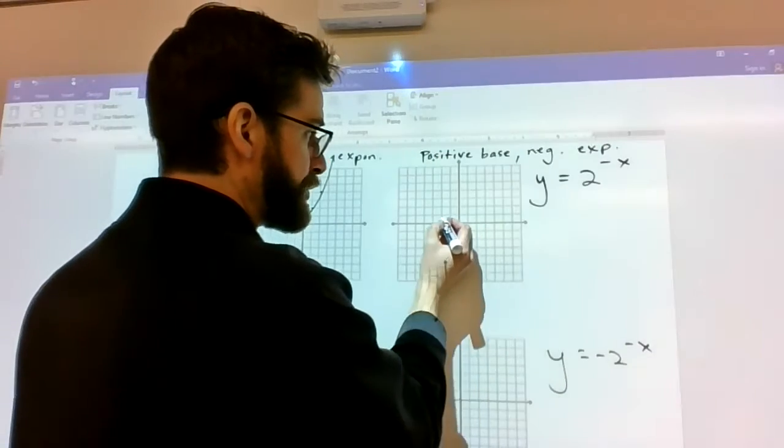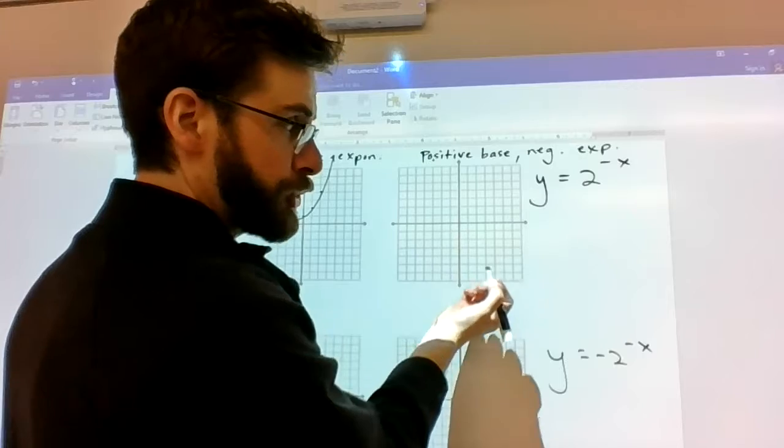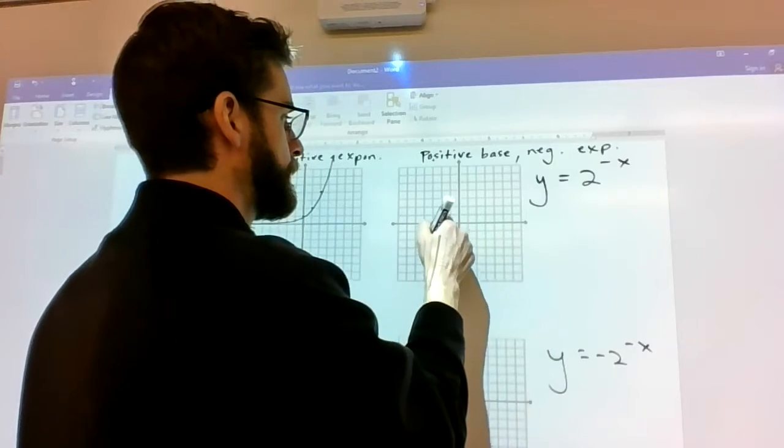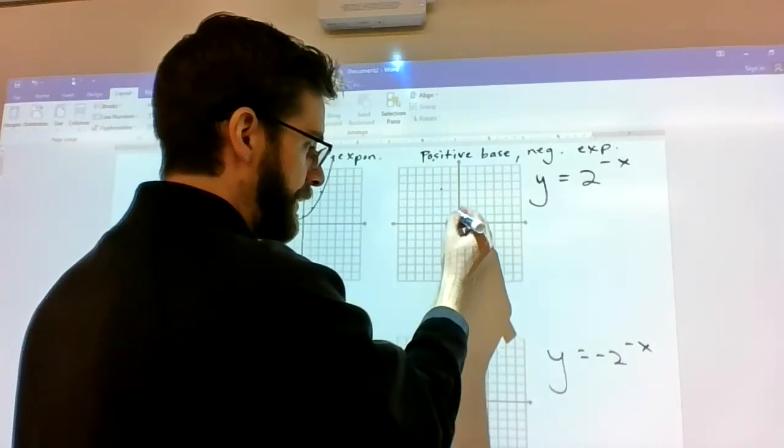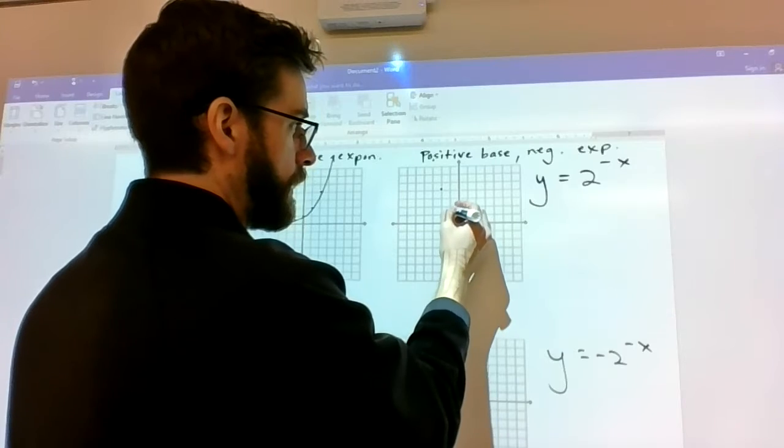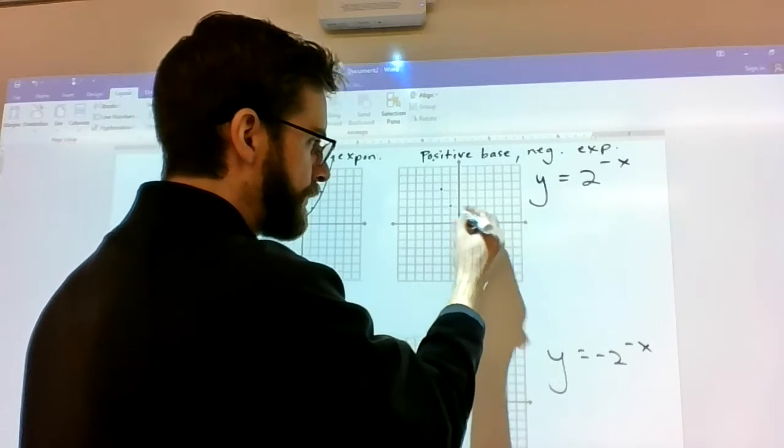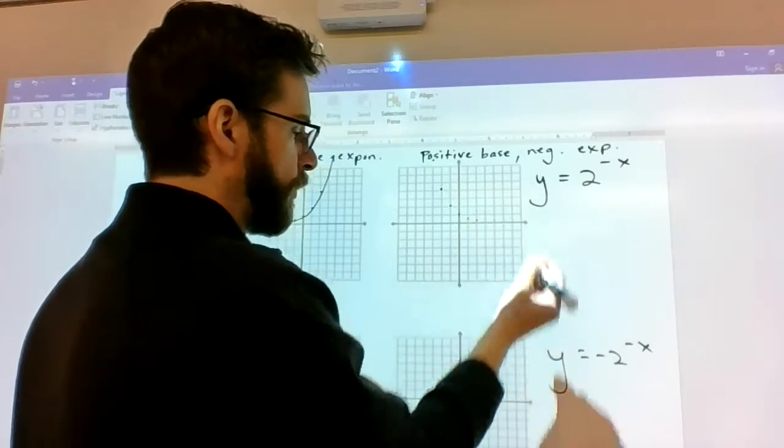Yeah, and then when you plug in negative 2, you go up to 4, because it's like 2 squared. And then down to 2, 0, 1, 1/2, 1/4, and so on.